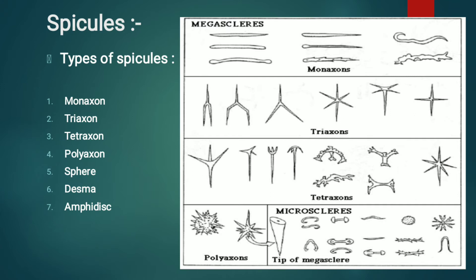The megascleres are various in shape and are classified on the basis of main axis and rays. The first type is monaxone, consisting of a single axis, straight or curved. The second is triaxone, consisting of three axes. Then tetraxone consists of four rays, including tri-radiate spicules. Polyaxone means having several equal rays, and sphere types are spherical in shape with concentric growth.